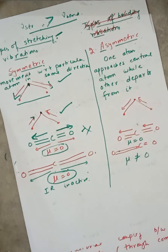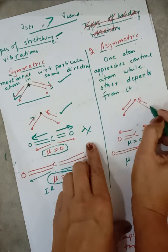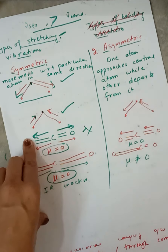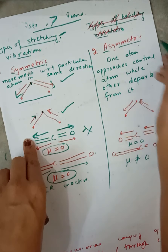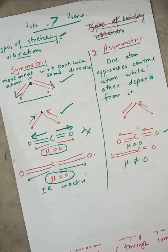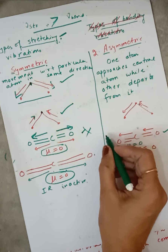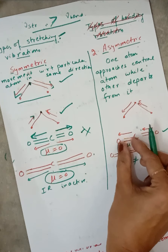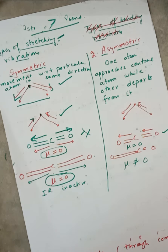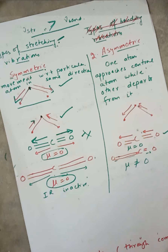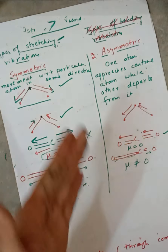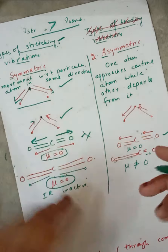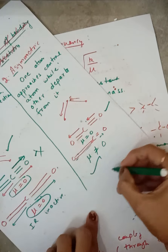Now coming to asymmetric stretch: one atom approaches the central atom while the other moves away from it. Taking the case of carbon dioxide, one oxygen moves away from carbon and the other moves toward carbon, so one bond gets compressed and the other gets elongated. Now the dipole moment will not be zero because it is unequal in both directions. So asymmetric stretch of CO2 involves a change in dipole moment and will be IR active.